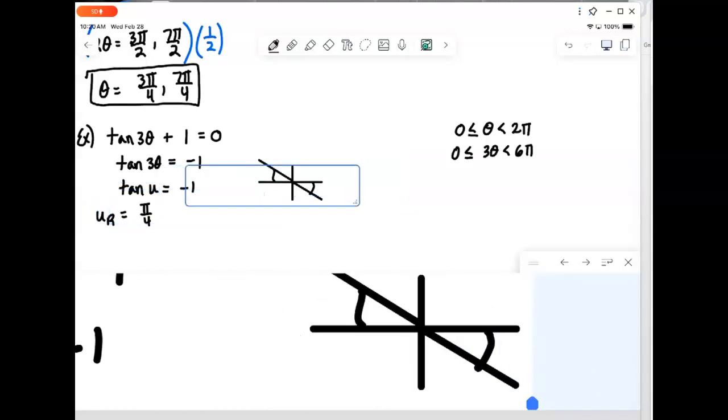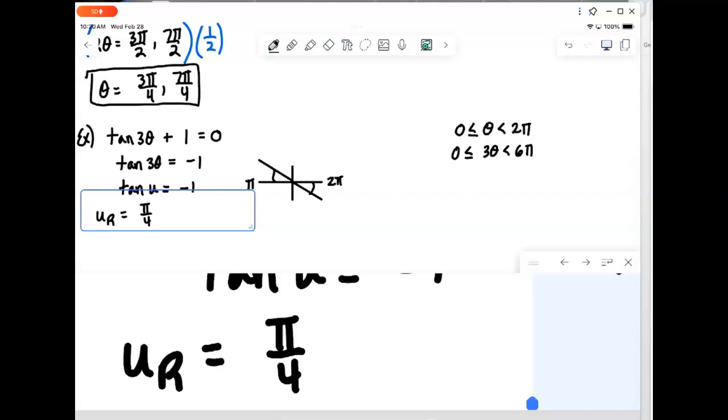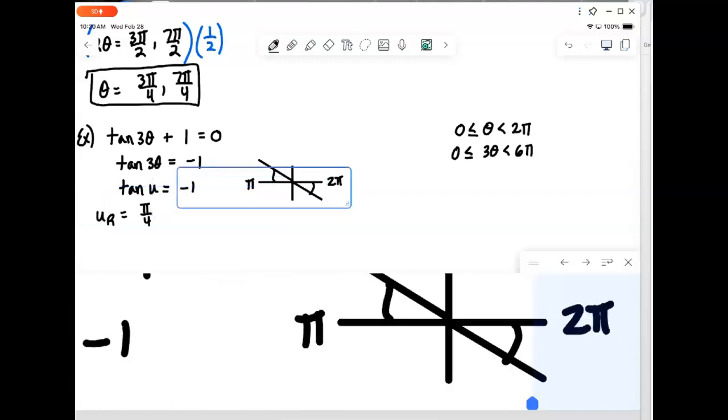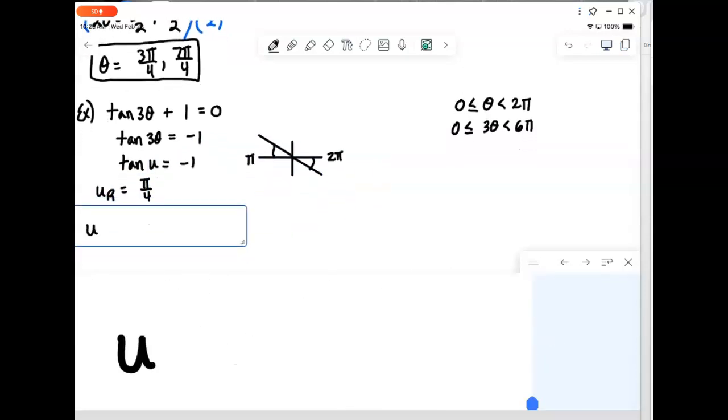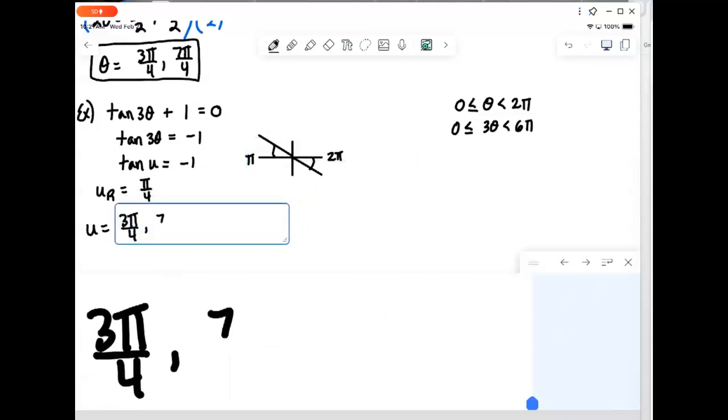And so, we would put that reference angle in. And, of course, in the second quadrant, we would be short of pi. So, it's going to be pi minus pi over 4. And that would give us u equals 3 pi over 4.